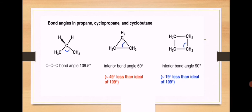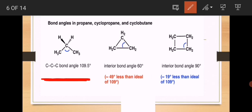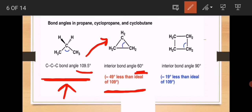The angle strain means that the ring strain arises from the difference in bond angles — the stability of the cyclic compound is different from the stability of the straight chain. Here you can see a comparison between straight chain propane and cyclopropane. In the straight chain, the bond angle for 3 carbon atoms is 109.5 degrees, but in cyclopropane the angle changes to 60 degrees. So there is a difference of 49 degrees between the two angles.